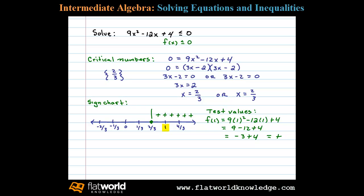Next we'll choose another value here in this left interval, let's say 0, and test that. So in this case, f(0) will be 9 times 0 squared minus 12 times 0 plus 4,